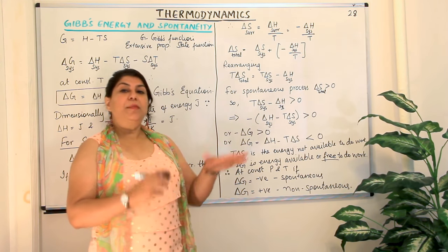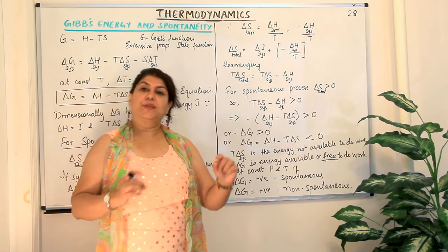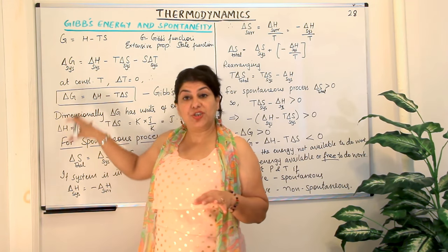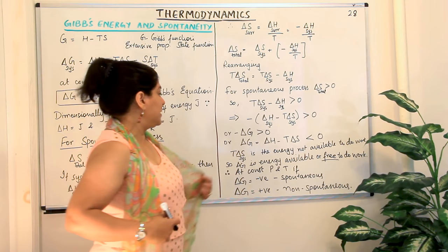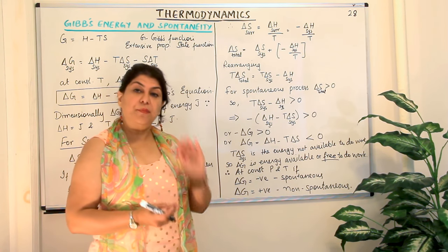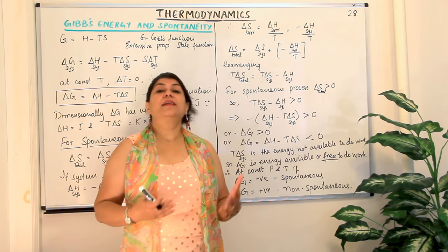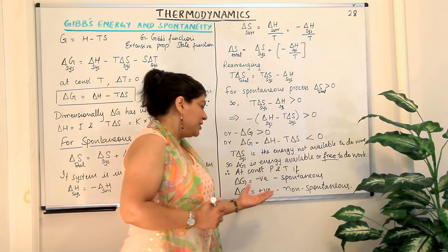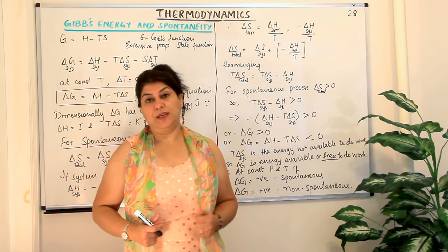To summarize, at constant pressure and temperature: if delta G is negative, the process is spontaneous; if delta G is positive, the process is not spontaneous. This is the relationship between Gibbs free energy and spontaneity.